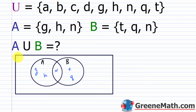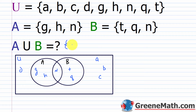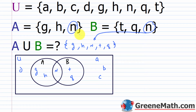Elements a, b, c, and d are in the universal set but not in A or B, so they go outside both circles. Now, A union B equals the set of all elements from both sets without double-listing — so that's g, h, n, t, and q. The main thing is to make sure n only appears once even though it's in both sets.